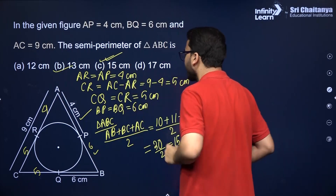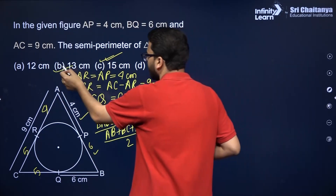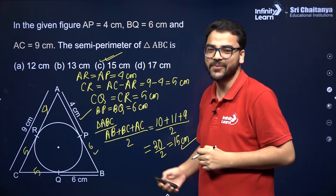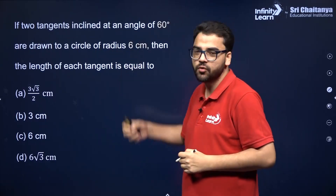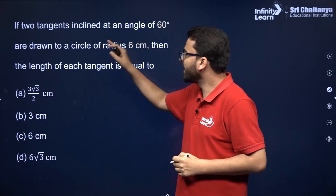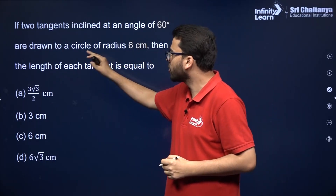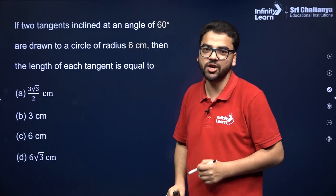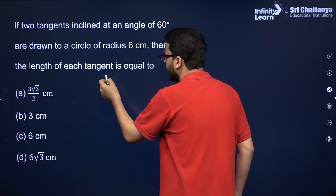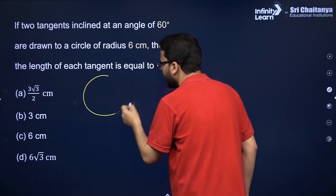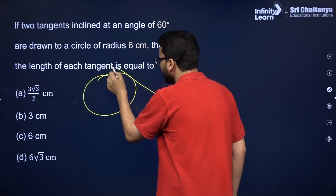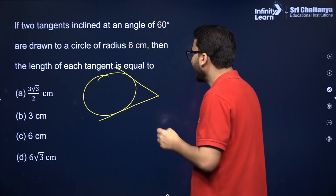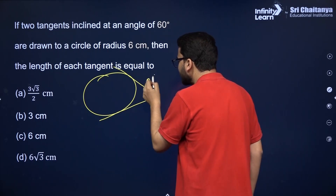So the semi-perimeter of triangle ABC is 15 centimeters. Now let us do one more question. If two tangents inclined at an angle of 60 degrees are drawn to a circle of radius 6 centimeters, you have to find the length of each tangent.